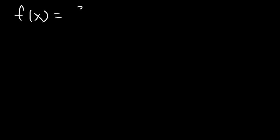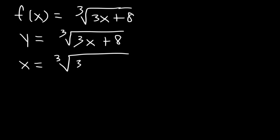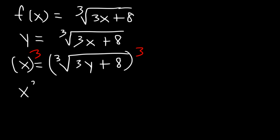Here's another one: f of x is equal to the cube root of 3x plus 8. Go ahead and determine the inverse function. So let's replace f of x with y. Next, let's switch x and y. And then solve for the variable y — we need to raise both sides to the third power. So x cubed is equal to 3y plus 8.